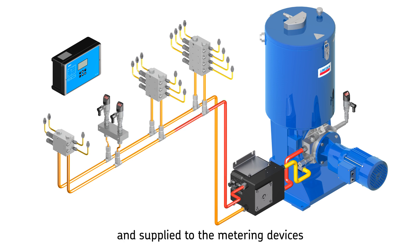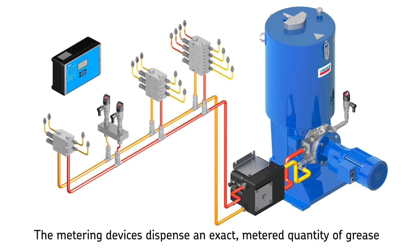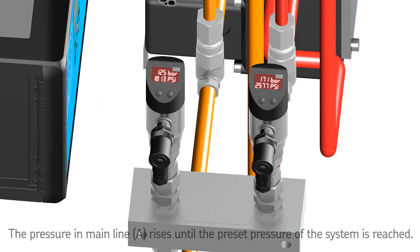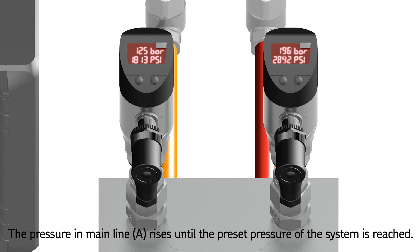The lubricant, conducted by the changeover valve, is supplied to the metering devices. The metering device pistons move into their adjusted end positions, dispensing an exact metered quantity of grease. Once all metering devices have dispensed their lubricant, the system is hydraulically closed, causing pressure in main line A to rise.